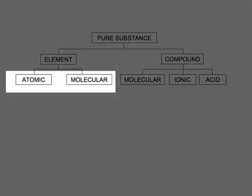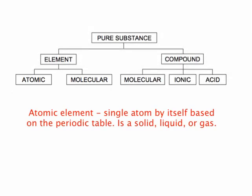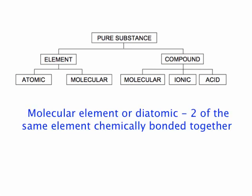There are two types of elements, atomic and molecular. Atomic is a single atom by itself on the periodic table. And the molecular element is two of the same elements chemically bound together on the periodic table.